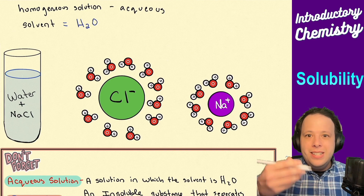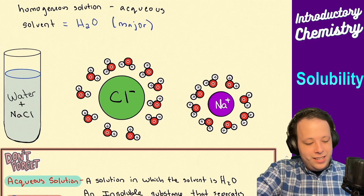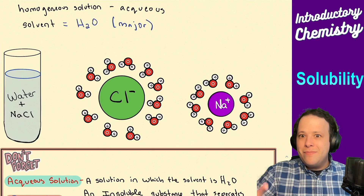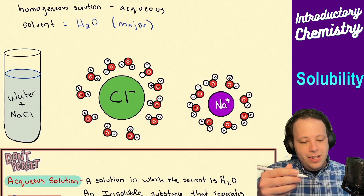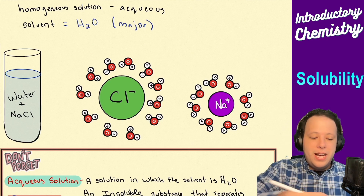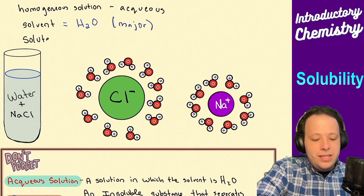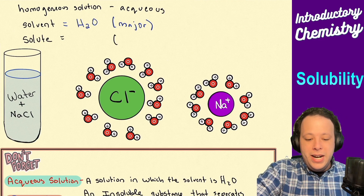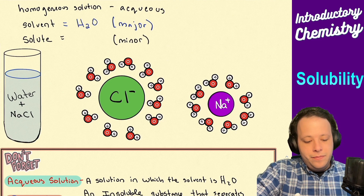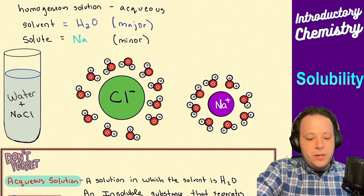Whenever something is a solvent, that is the major shareholder in this particular vial. We also have a solute. The solute is the smaller or minor component — in this case it's going to be sodium chloride.